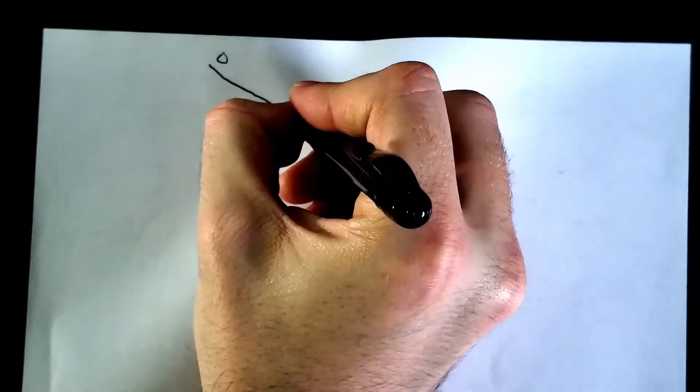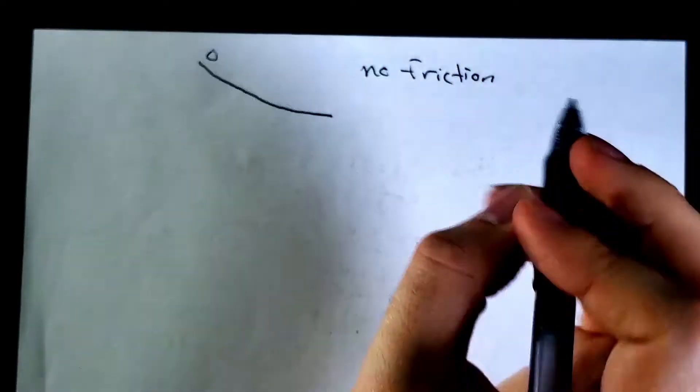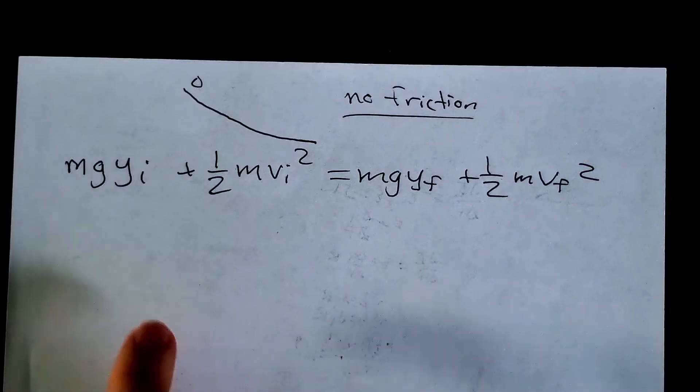The brachistochrone curve concerns a falling object, but so far we haven't included any falling aspect in Snell's law. We need to map the velocities of light to the velocities of the falling object. For a ball rolling down some path with no friction — and without friction there's no rolling kinetic energy — we can apply conservation of energy.